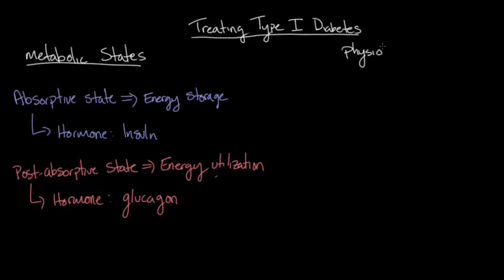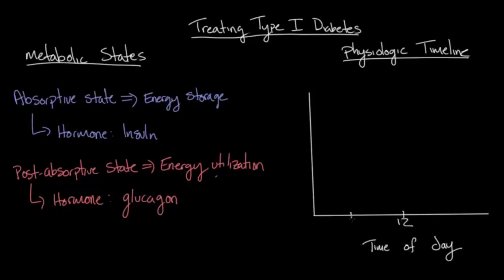So to get a better understanding of how this looks, let's draw what I'll call a physiologic timeline. Let's bring in a graph here to help describe this timeline. On the x-axis, we'll have the time of the day. In the middle, we'll have noon, 6 in the morning, 6 at night, midnight, and then maybe 3 a.m., 9 a.m., 3 p.m., and 9 p.m.